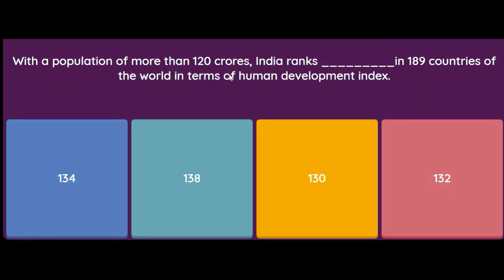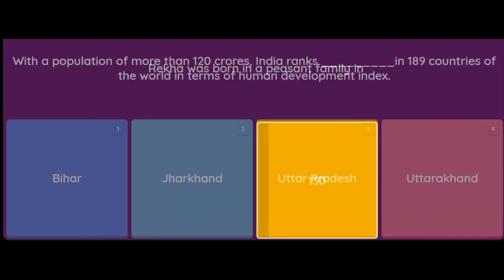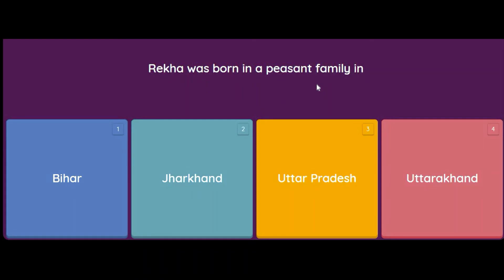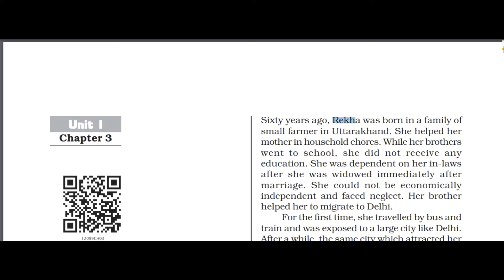With a population of more than 120 crores, India ranks 130 among 189 countries of the world in terms of the Human Development Index. Next, it is a case study question: Rekha was born in a peasant family in — Bihar, Jharkhand, Uttar Pradesh, or Uttarakhand? The answer is Uttarakhand. From the book: sixty years ago, Rekha was born in a family of small farmers in Uttarakhand. She helped her mother in household chores while her brothers went to school. She did not receive any education. She was dependent on her in-laws and after being widowed immediately after her marriage, she could not be economically independent and faced neglect. Her brother helped her to migrate to Delhi.